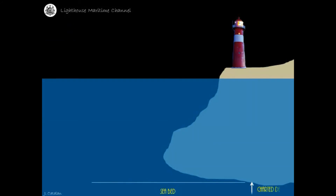Charted depth is the vertical distance from a reference plane or datum to the ocean bottom. Chart datum is the level of water from which the charted depths displayed on a nautical chart are measured.